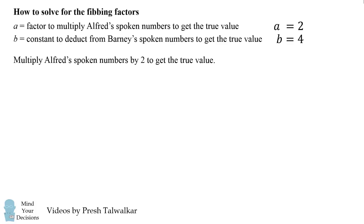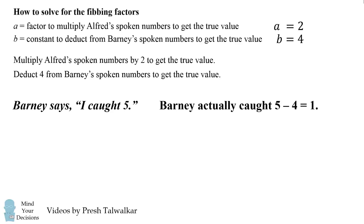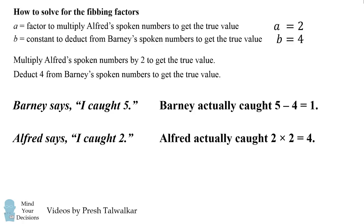We know that we have to multiply Alfred's spoken numbers by two to get the true value, and we have to deduct four from Barney's spoken numbers to get the true value. So when Barney says he caught five fish, that means he actually caught five minus four, which equals one fish. When Alfred says he caught two fish, he actually caught two times two, which equals four fish. And that's the correct answer.